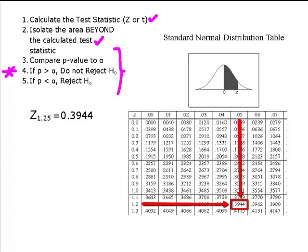So for example, I have collected data, I've calculated the test statistic, and it ends up being z of 1.25. Going to my standard normal distribution table, I'm going to find the z-score of 1.25.